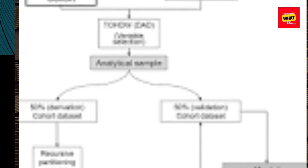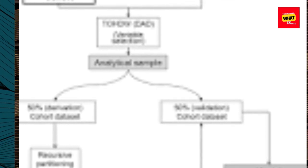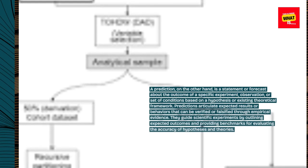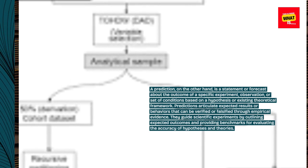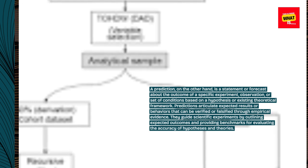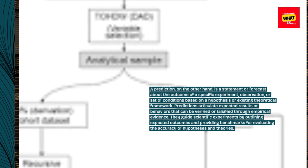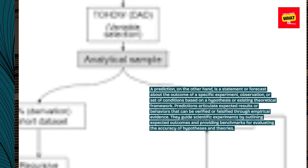A prediction, on the other hand, is a statement or forecast about the outcome of a specific experiment, observation, or set of conditions based on a hypothesis or existing theoretical framework. Predictions articulate expected results or behaviors that can be verified or falsified through empirical evidence. They guide scientific experiments by outlining expected outcomes and providing benchmarks for evaluating the accuracy of hypotheses and theories.